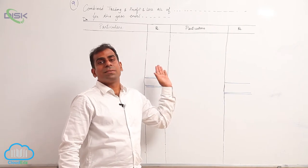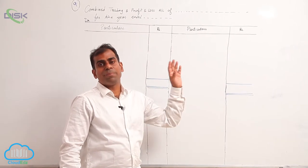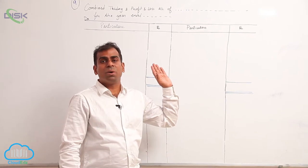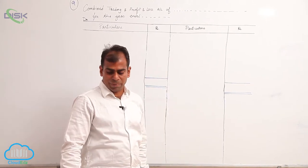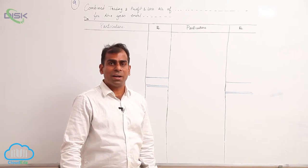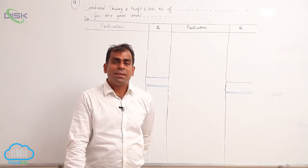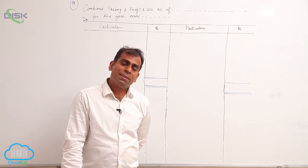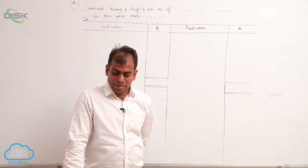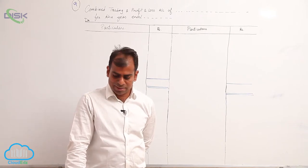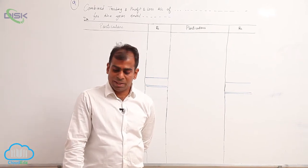So remember to ignore furniture while you prepare. You can just strike it out or underline or circle it. The other items we've already discussed, similarly bad debts, discount allowed, sales expenses, etc., will come in your trading account or P&L account.